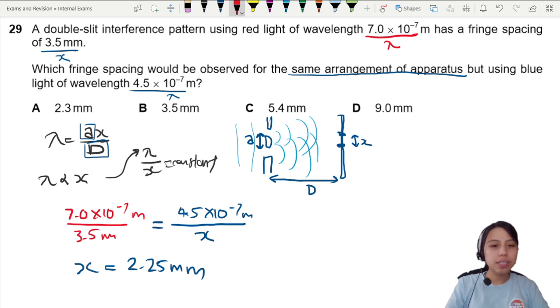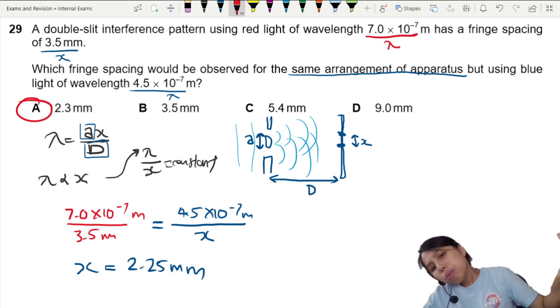The best choice is A, 2.3 if I round it off. So stay calm if you don't have enough information like 'oh they never give a, they never give d' - that means you can probably do a ratio.